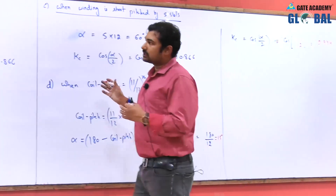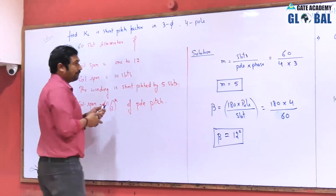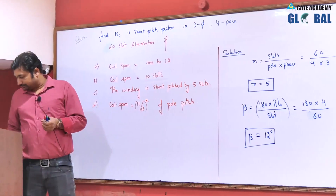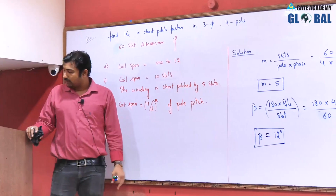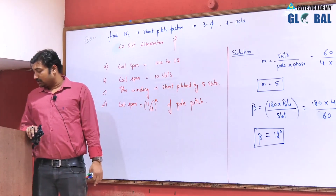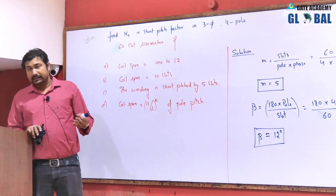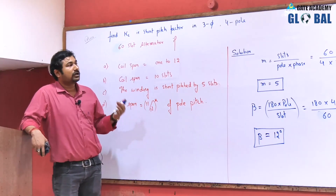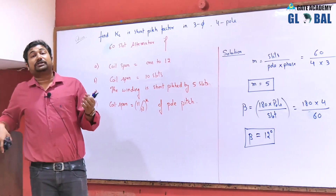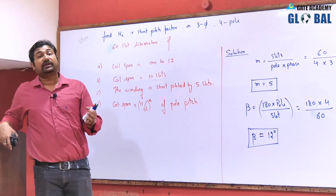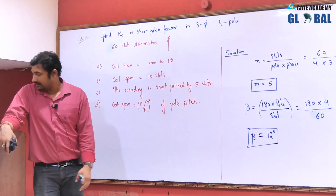You will be well able to understand the coil pitch factor in terms of slots, coil, pole pitch, and cording. One more question: given a three-phase alternator with slots per pole per phase equal to 5 and coil span equal to 12 slot pitches, find the coil span factor. Find the slot angle, then coil pitch in degrees, then α = pole pitch minus coil pitch, and finally K_c = cos(α/2).